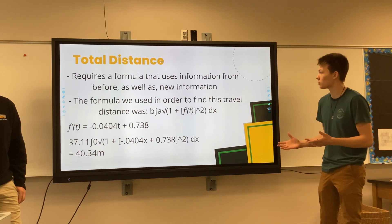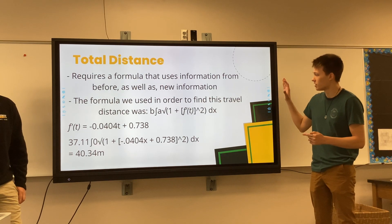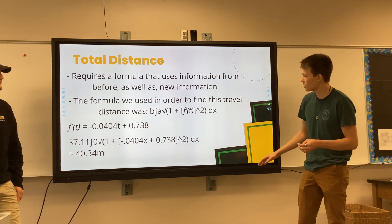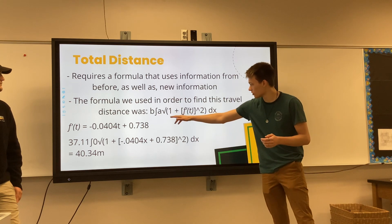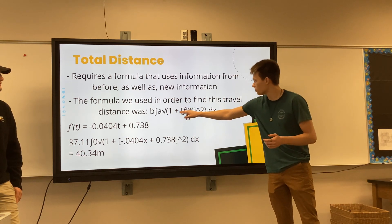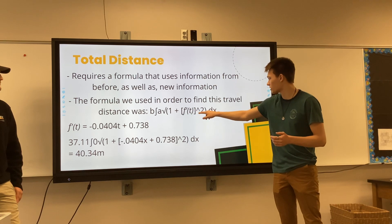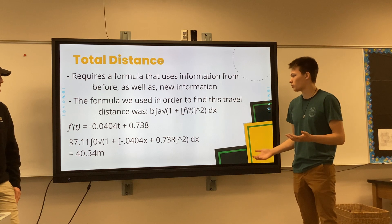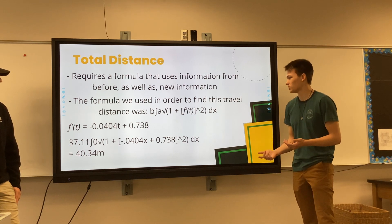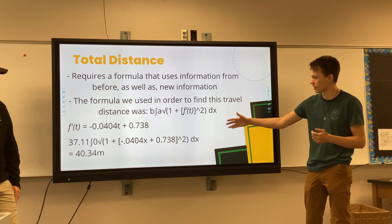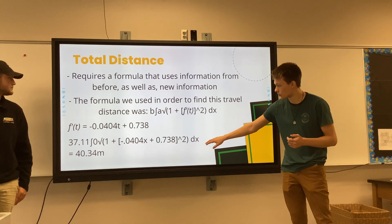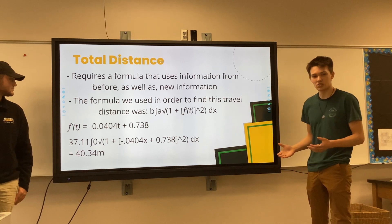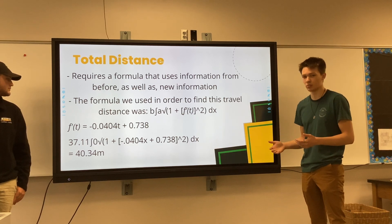For total distance, we use a more complex formula that also uses an integral, but it involves squaring the derivative plus 1 under a square root — the arc length formula. The derivative is −0.0404T + 0.738. Plugging in all of our information including the new derivative and squaring it, we find that the total distance the ball traveled is about 40.34 meters.